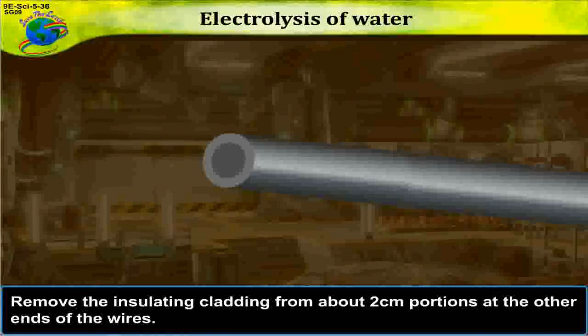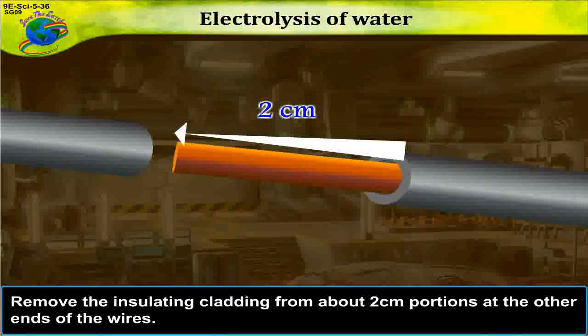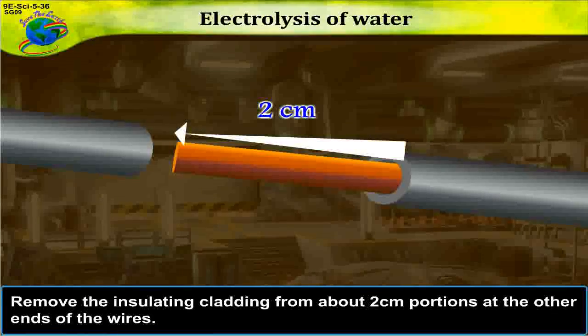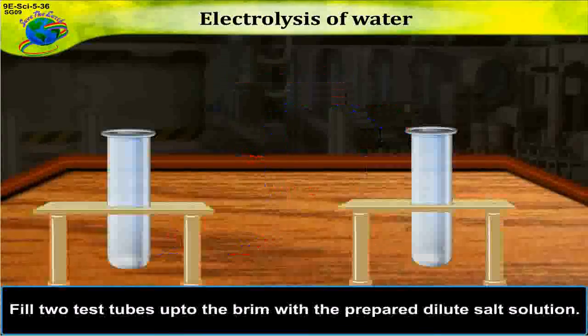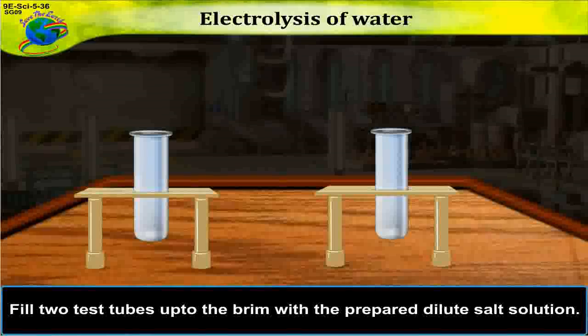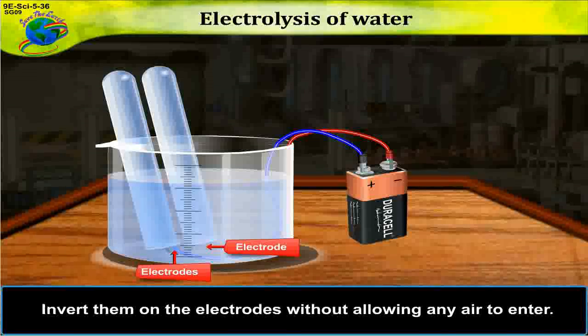Remove the insulating cladding from about 2 centimeter portions at the other ends of the wires. These are the two electrodes. Fill two test tubes up to the brim with the prepared dilute salt solution. Invert them on the electrodes without allowing any air to enter.